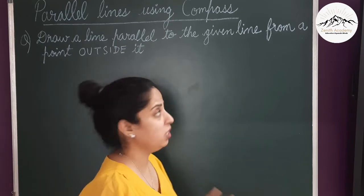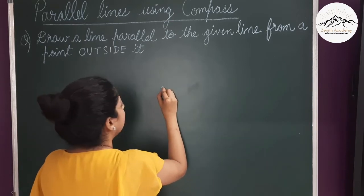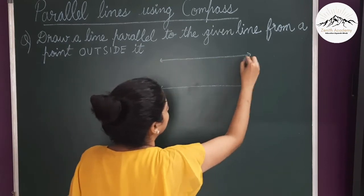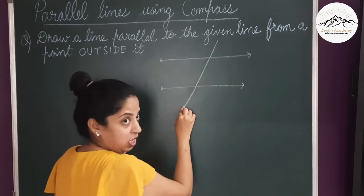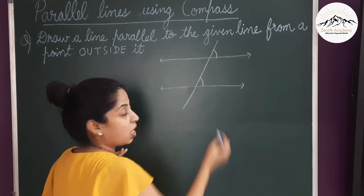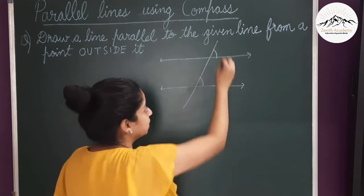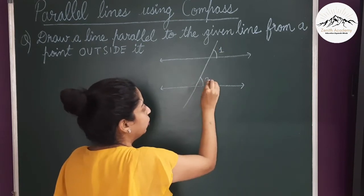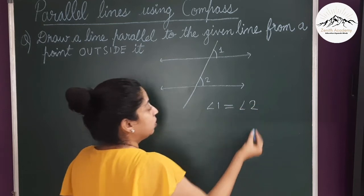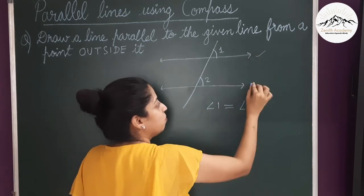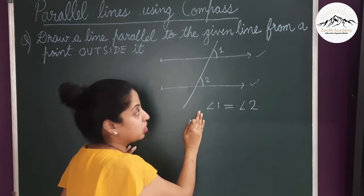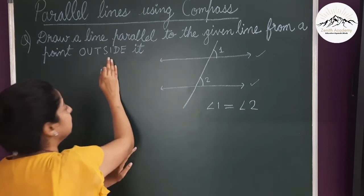Before going further, let me tell you this: when there are two parallel lines and there is a transversal, this angle and this angle — what type of angles are these? Corresponding angles. So angle 1 and angle 2 — angle 1 should be equal to angle 2 for the two lines to be parallel. We will use this fact in solving this construction.